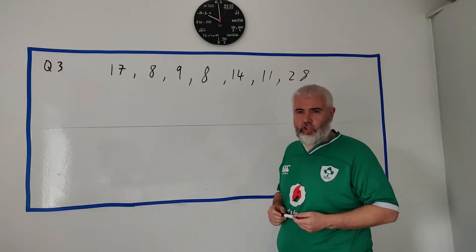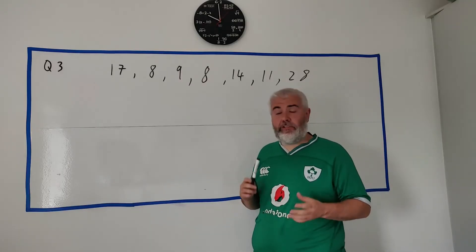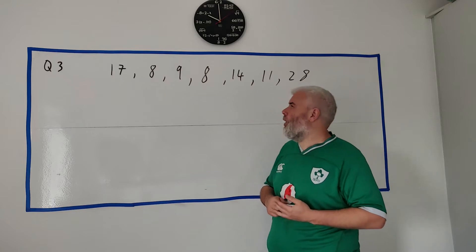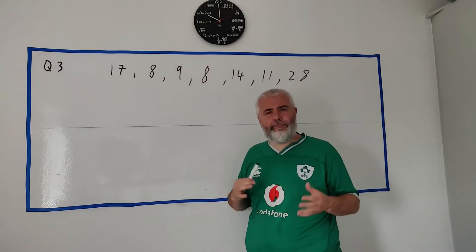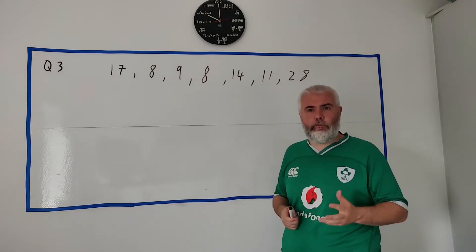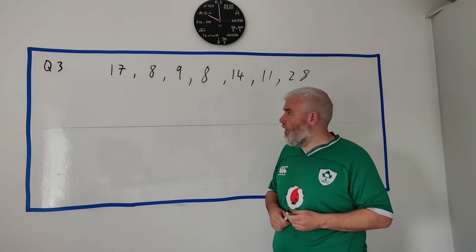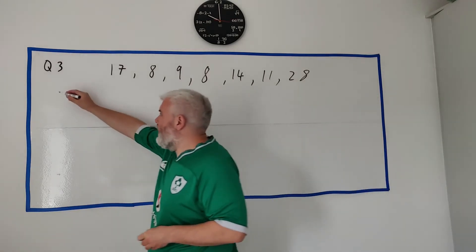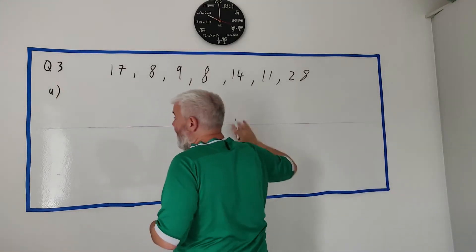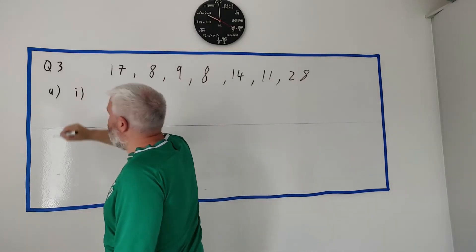And this is question three. This question is going to be all about statistics - we're going to be dealing with averages, means, medians, and a bit of counting in part b of the question. Part a of the question gives us these seven numbers and they simply ask us to find the mean.